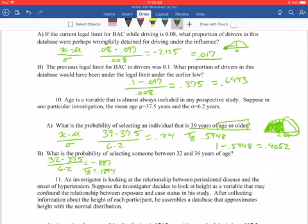That's for 32. For 36, 36 minus 37.5 divided by 6.2 gives us a Z-score equals negative 0.241. Table B in the back is going to give us 0.4052. We're going to take 0.4052 to find the area in between minus 0.1894 and that's going to give us the area in between which is 0.2158.